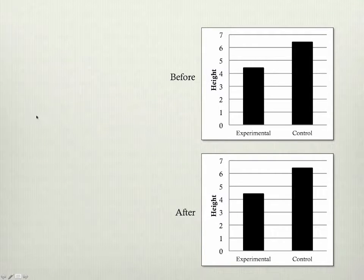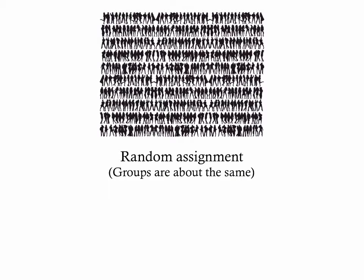So the easiest, most cost-effective way to rule out that kind of biased assignment is to instead do the assignment totally randomly. This is another example of a system you can put in place in science that takes your biases out and makes sure they aren't influencing the results.